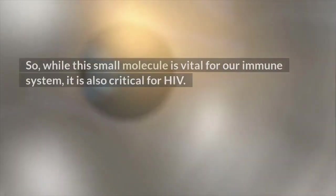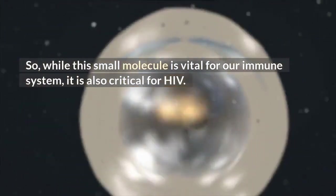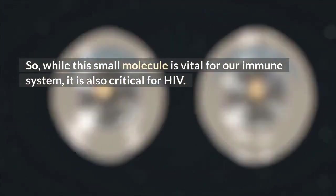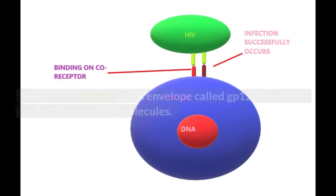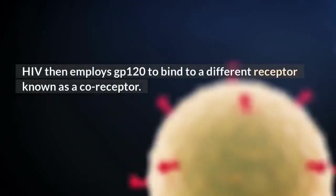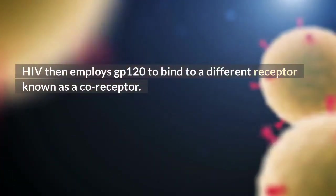This is especially crucial when the cells are starting attacks against foreign invaders. So while this small molecule is vital for our immune system, it is also critical for HIV. HIV uses a protein on its envelope called gp120 to locate and adhere to CD4 molecules, then employs gp120 to bind to a different receptor known as a co-receptor.